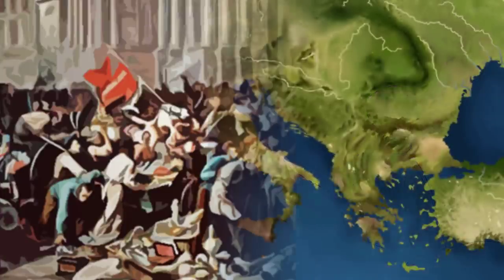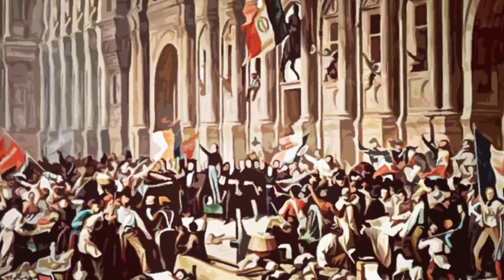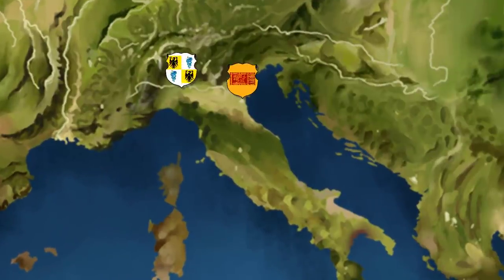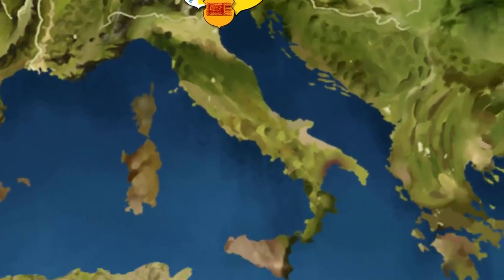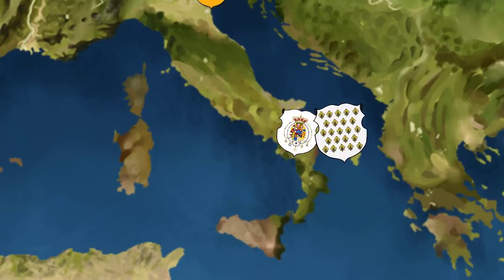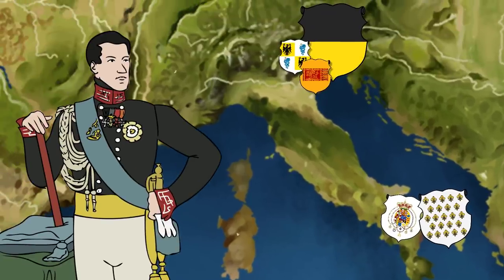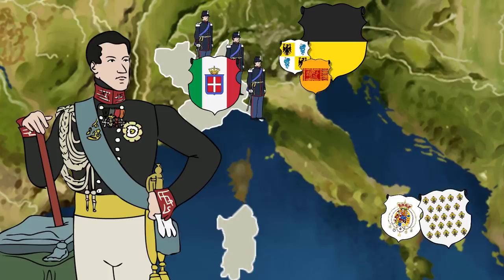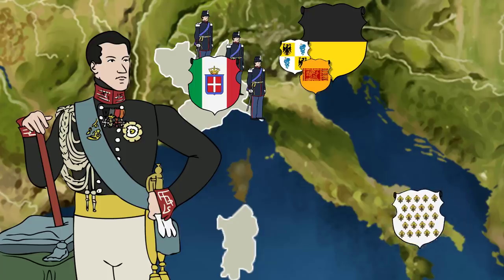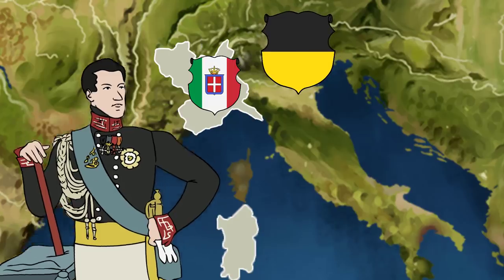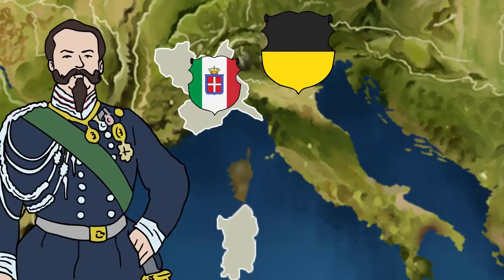In 1848, revolution in France once more spilled over onto the Italian peninsula. This led the subjugated peoples of Milan and Venice to take up arms against their Austrian rulers. The Neapolitans, meanwhile, were in open revolt against the Bourbon regime. In recognition of this turbulent state of affairs, Charles Albert, the king of Piedmont-Sardinia, declared war on Austria, marking the official start of the First Italian War of Independence. However, the Neapolitans' early withdrawal, coupled with disagreements with the Milanese and Piedmontese, led to an Austrian victory, and Charles Albert was forced to abdicate to Victor Emmanuel II. The Piedmontese were also forced to pay 65 million francs in reparation to Austria.